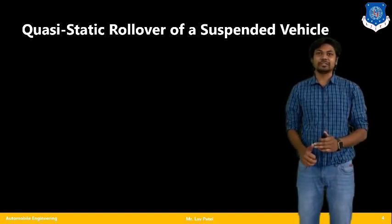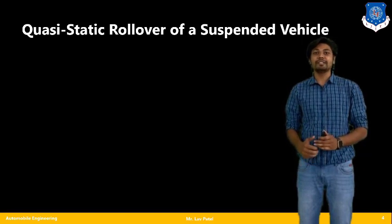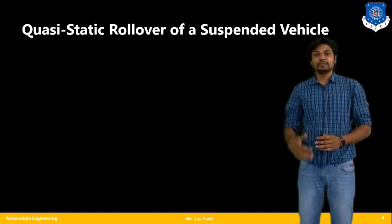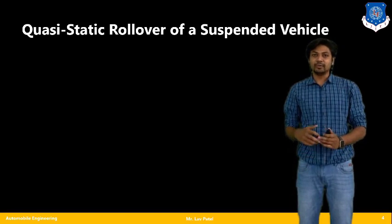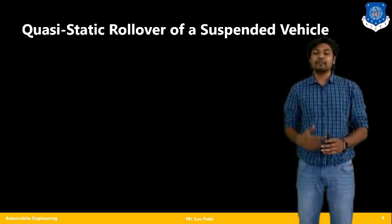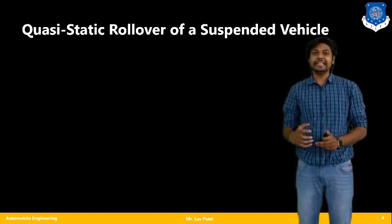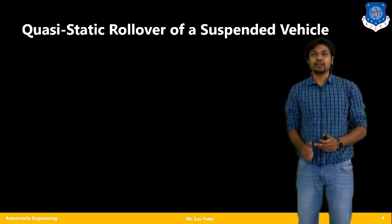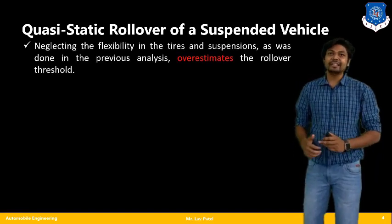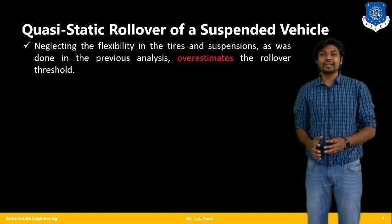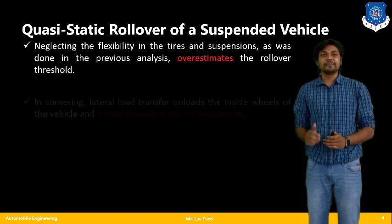In the previous section we studied the quasi-static rollover of a rigid vehicle, in which we neglected all suspension effects as well as tyre smoothness. From that, we found that due to lateral acceleration we can calculate a rollover threshold. However, in actual practice we need suspensions to overcome rollover conditions, and neglecting tyre and suspension flexibility over-estimates the rollover threshold.